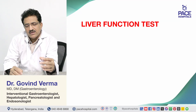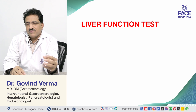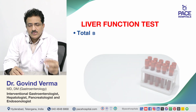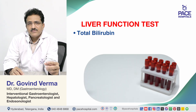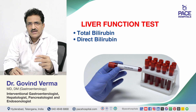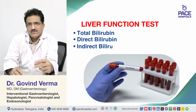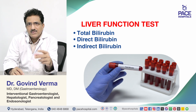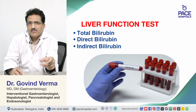Whenever we look at a liver function test, we see two fractions. One is total bilirubin, and the second fraction is direct and indirect bilirubin, which combinedly give you the total bilirubin value.